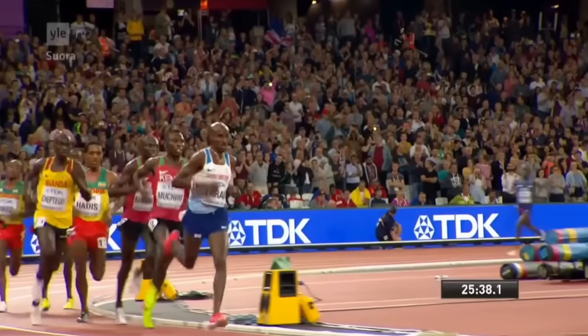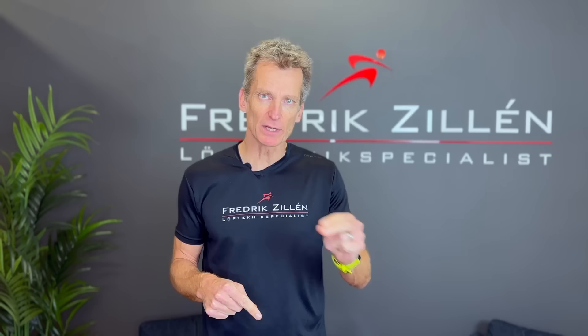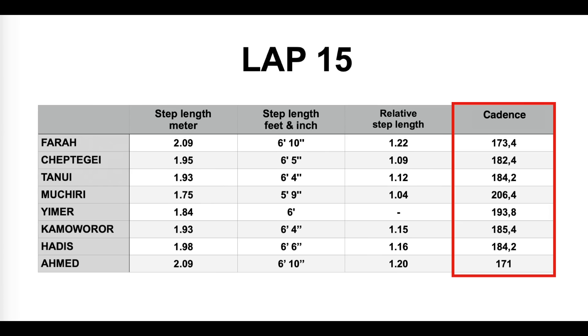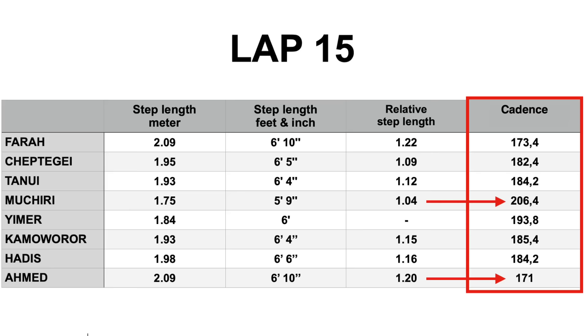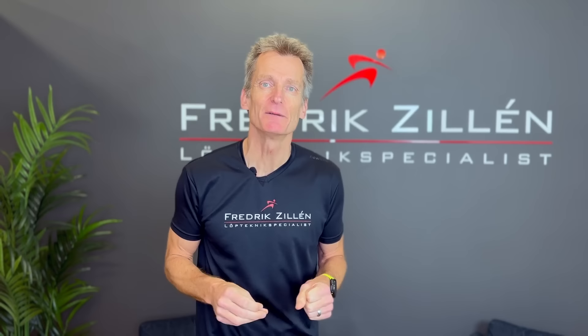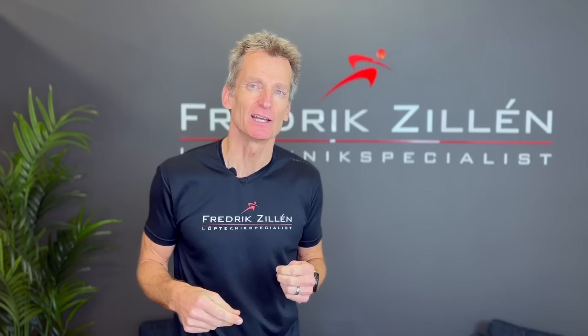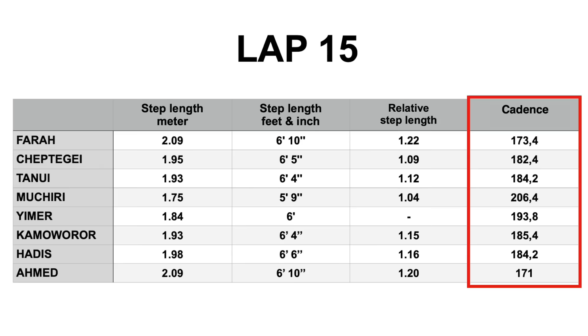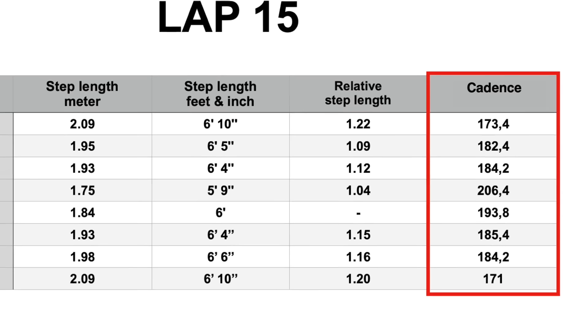Let's look at the final of the men's 10,000 meters at the 2017 World Championships. When you run 10,000 meters, you run 25 laps on the track. Here are some numbers from lap 15. There's quite a difference in terms of cadence, from 171 to 206. This gives you a new argument when your running mates claim that 180 steps per minute is the optimal cadence for all runners at all paces. If that were the case, everyone in this World Championship final should have a cadence of 180 — but that is not the case, of course.